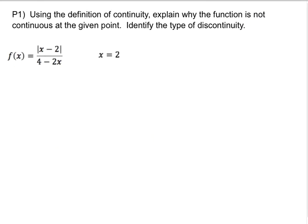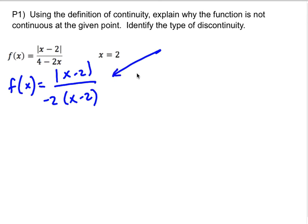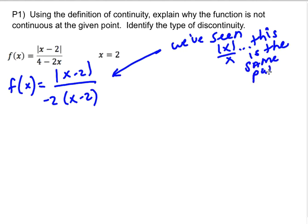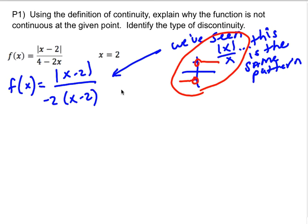All right, P1 — try the same thing. You can do it however you want, but it's going to involve looking at the left limit, the right limit, the double-sided limit, and the actual function value. Pause if you want to try it on your own. So I'm going to argue that we've seen this function before. If I reorder this and factor out a negative two, it seems to me that we've seen absolute value of x over x — this is the same pattern. I expect a jump discontinuity.